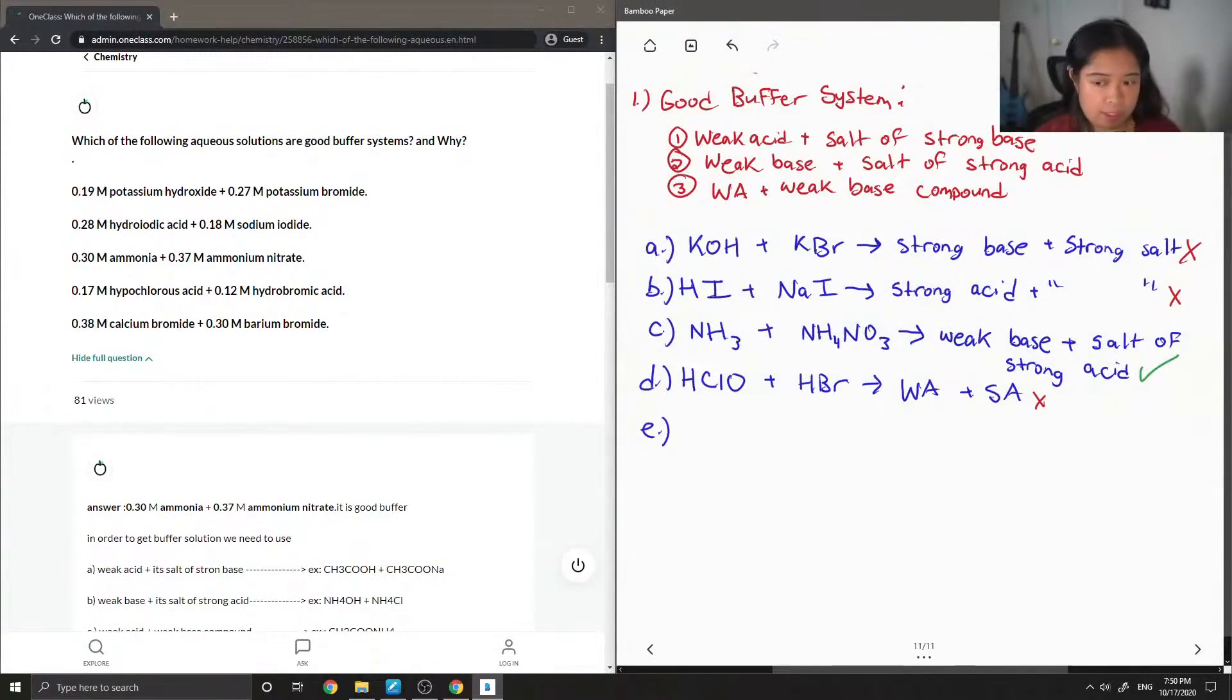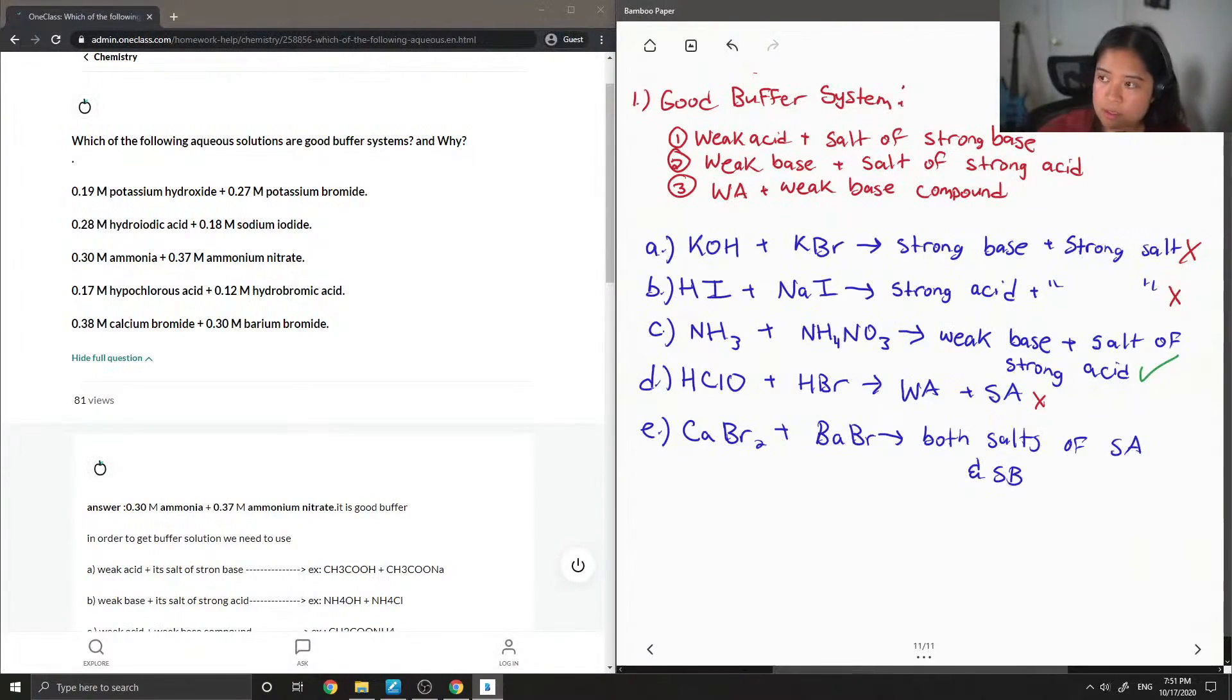And then lastly, calcium bromide, plus barium bromide. So these are both salts of strong acids and strong base. So this also can't be used as a buffer system.